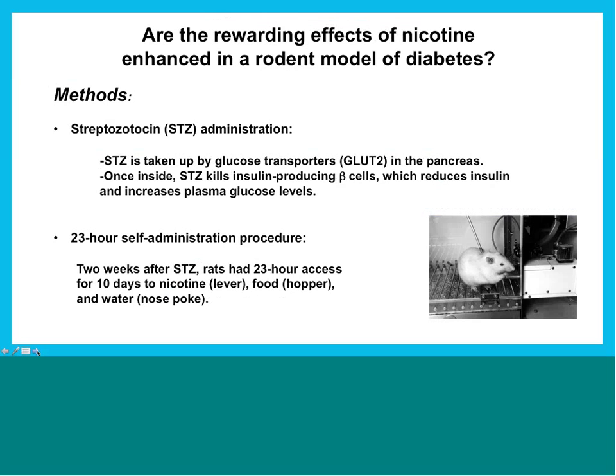We wanted to see whether the diabetic state in any way enhances the pleasurable effects of nicotine. We started by using an already-developed model of type 1 diabetes: administration of streptozotocin, a toxin that gets into the pancreas and destroys the insulin-producing beta cells. Essentially, it destroys the beta cells, and the animal exposed to streptozotocin will have significant deficits — if not complete lack — of insulin production and release.